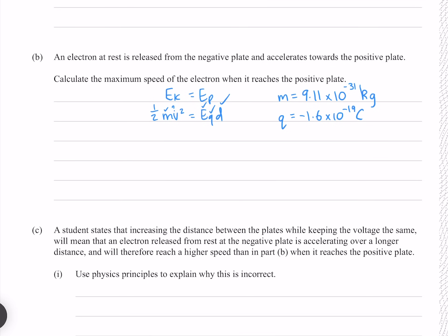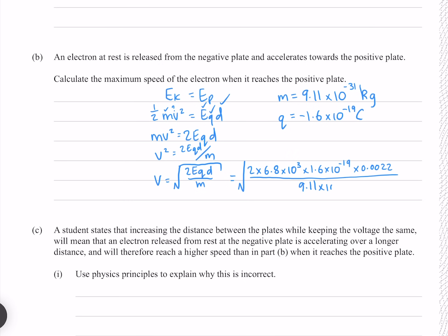First, multiply both sides by 2, then divide both sides by mass, and finally square root both sides. Putting our numbers in gives 2.3 × 10⁶ meters per second to two significant figures. Note that we needed to drop the negative sign, because otherwise our square root would have a negative number, which would produce a math error.